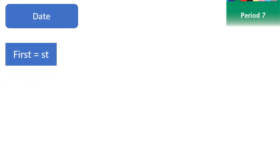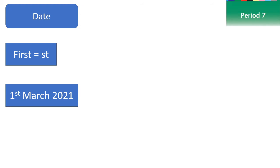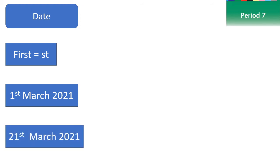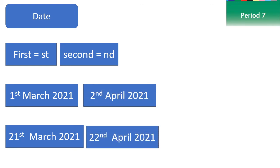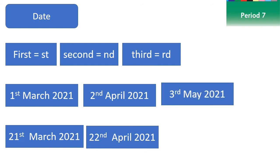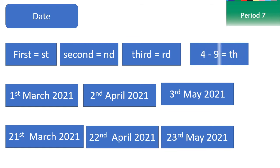Now about the date: remember that the word 'first' is represented by 'st' — like 'First of March, 2021.' For 'twenty-first of March, 2021,' write the number and add 'st' above it. 'Second' uses 'nd' — like 'Second of April' or 'Twenty-second of April.' 'Third' uses 'rd' — like 'Third of May' or 'Twenty-third of May.'